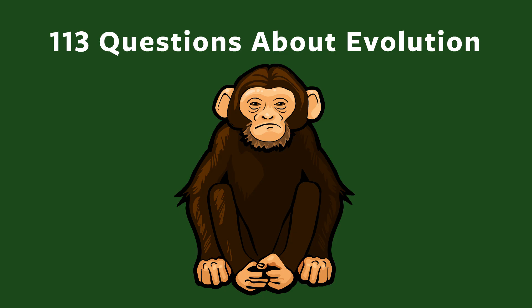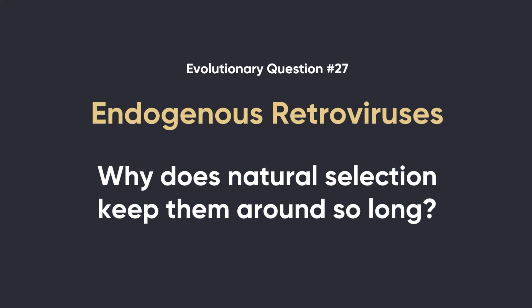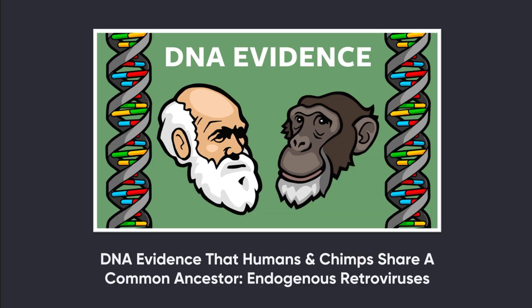113 questions about evolution with John Perry — evolutionary question number 27: endogenous retroviruses. Why does natural selection keep them around for so long, tens of millions of years in some cases? Welcome back everyone, John Perry here. Today we continue our mini-series inside of the larger mini-series, responding to specific questions sent to me by young earth creationists who were upset by an animation I did on the Stated Clearly channel about endogenous retroviruses. If you haven't seen that animation yet, I recommend you stop this video, go watch it — the link is in the description — and come back. It's important to have a solid grasp of retroviruses and endogenous retroviruses before watching this video.